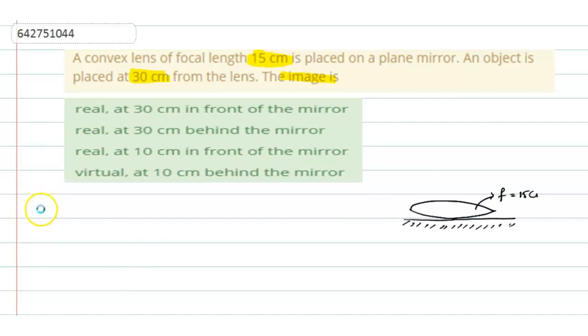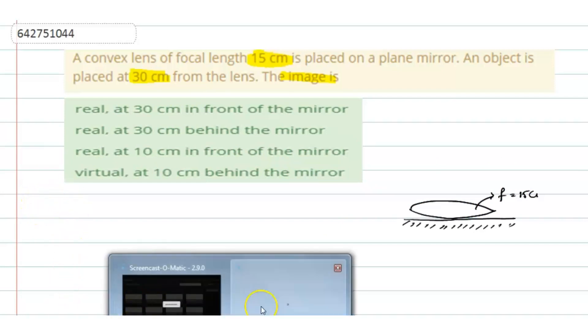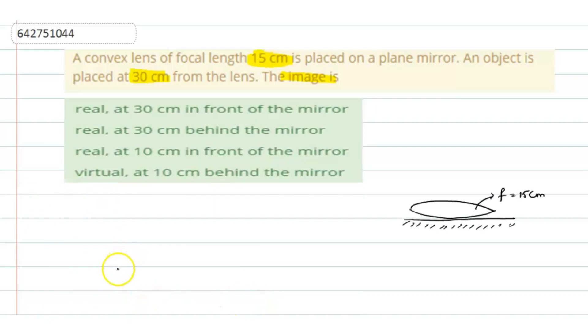So for that, we shall first find out the combination of the focal length. Now in this situation, we shall find the combination of the focal length as 1 by f which is equal to...